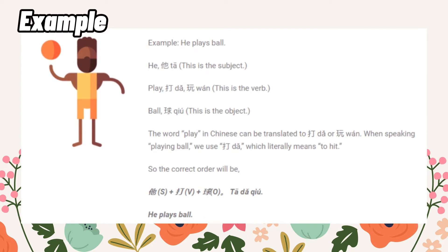For example, 'he plays ball.' He is ta, play is da, ball is chou. The word 'play' in Chinese can be translated to da or wan. When speaking about playing ball, we use da, which literally means 'to hit.' So the correct order is subject plus verb plus object: ta, da, chou — he plays ball.